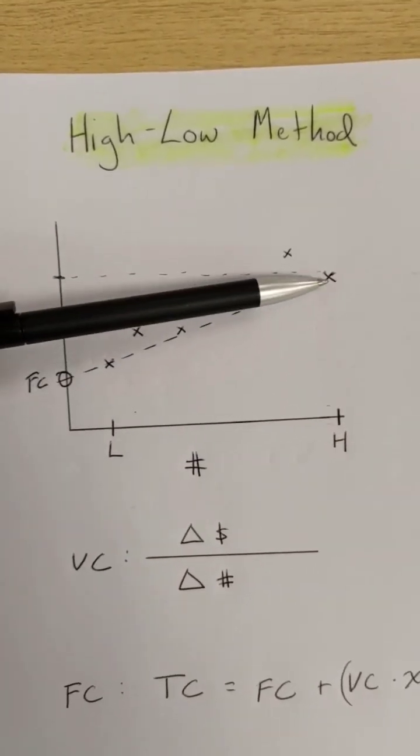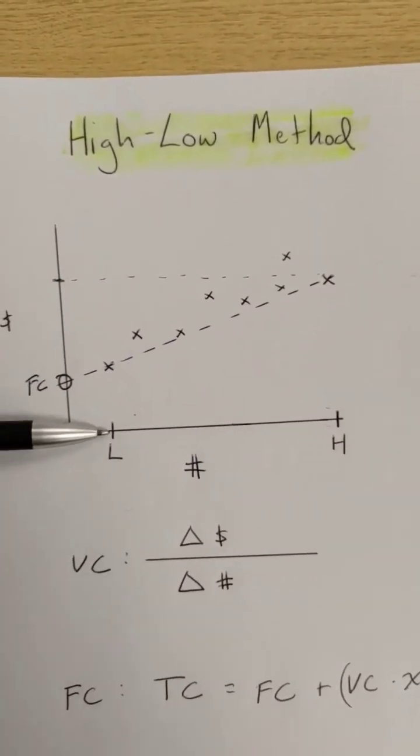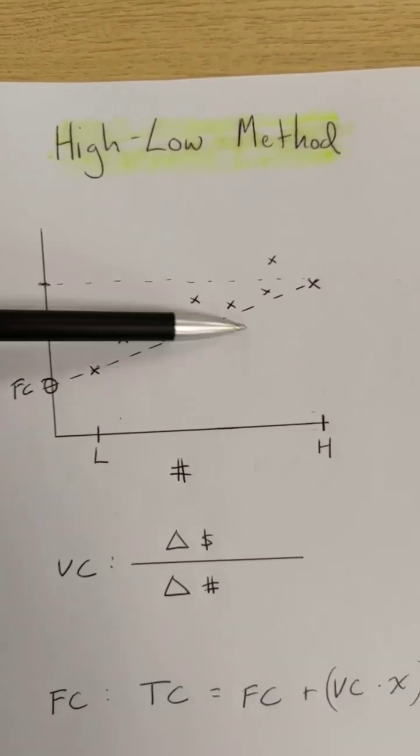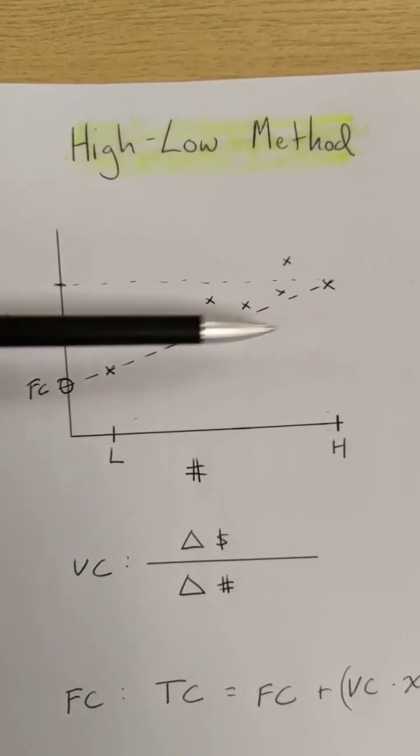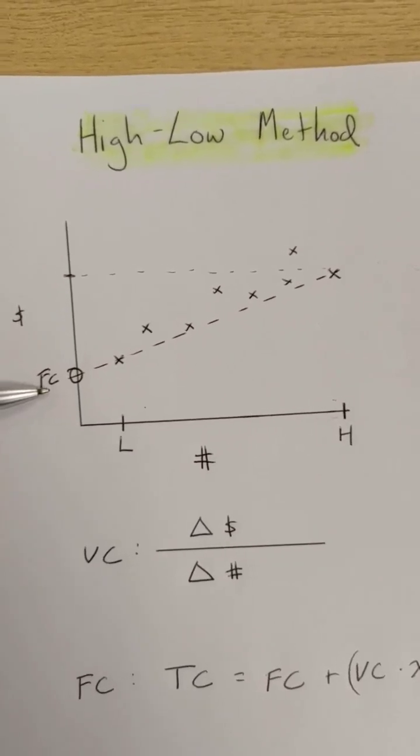I find the high activity, the low activity, ignore everything in the middle, and then I assume a perfect linear relationship between the two.